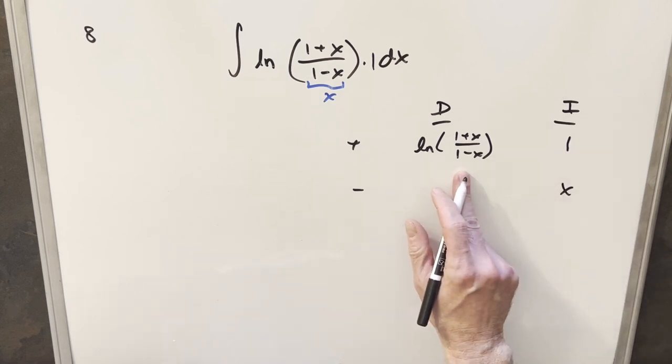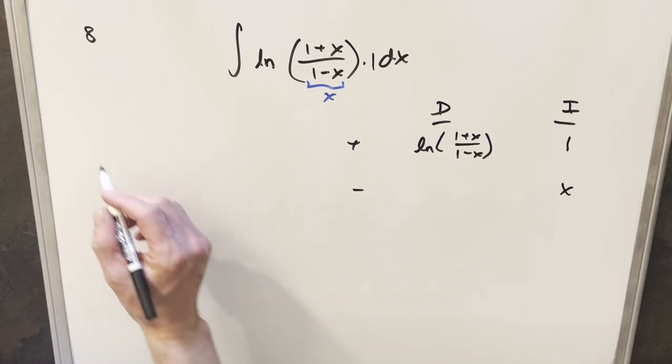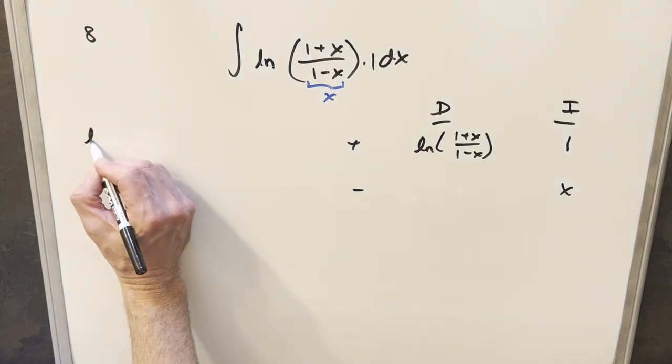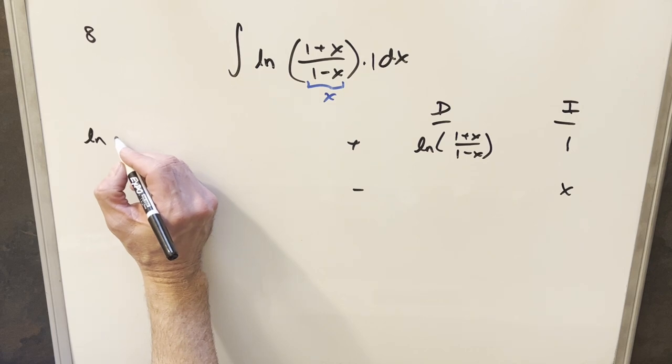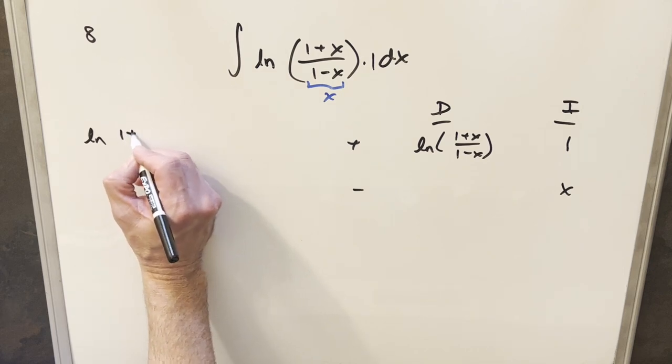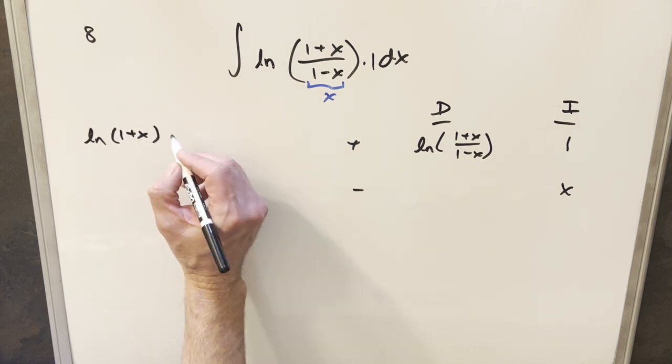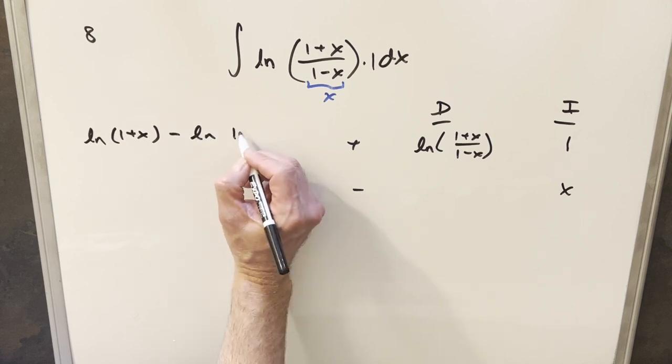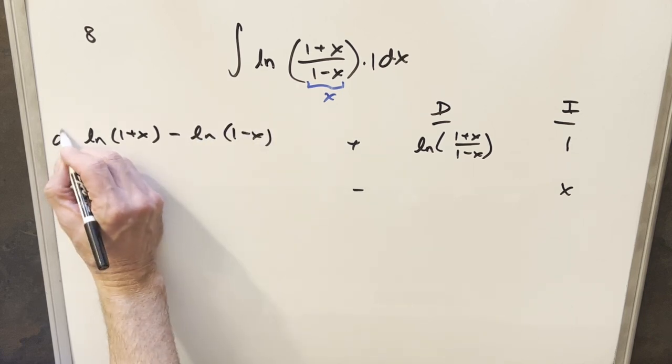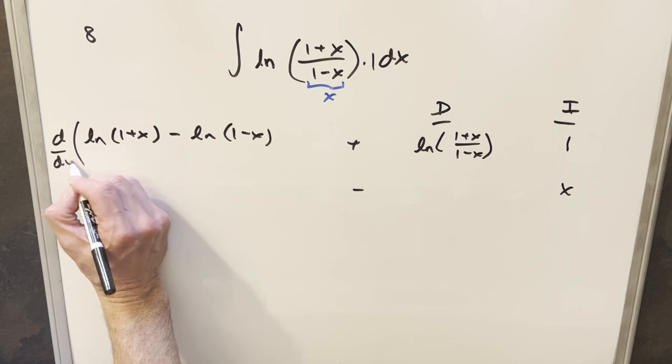Now I have to differentiate this thing, which is a little bit complicated. What I'm going to do is take it over here to the side. I'm actually going to separate it using log properties first. I don't really have to, but I kind of like doing it this way. So I'll write it as natural log (1+x) minus natural log (1-x), and we want to take a derivative of this thing.